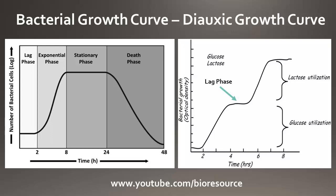During the exponential phase, all the carbon source is utilized. For E. coli, the preferred source of carbon is glucose — even though lactose is present, it will not be utilized. Glucose is the preferred carbon source for E. coli. If you remember the earlier video about lac operon regulation, you will understand why it prefers glucose rather than lactose. Once the glucose is completely utilized, the bacterial cells prepare the machinery and enzymes required for metabolizing lactose.